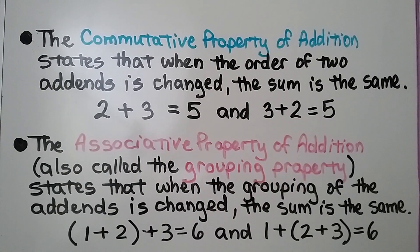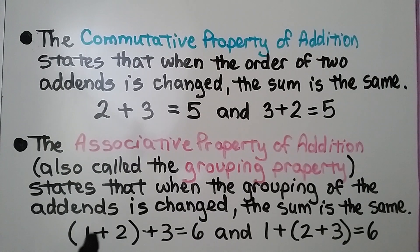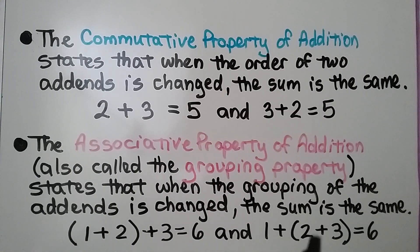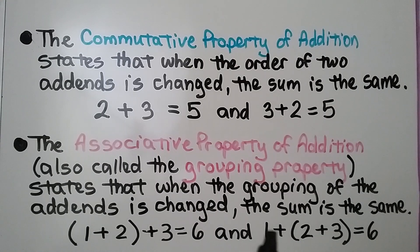The associative property of addition, also called the grouping property, states that when the grouping of the addends is changed, the sum is the same. Here we have 1 plus 2 in parentheses, which is 3, and we add 3, that's equal to 6. And if we group the 2 plus 3 together first, we add those in parentheses first — that's 5 plus 1, which is equal to 6. It didn't matter how we grouped it; the sum is the same.